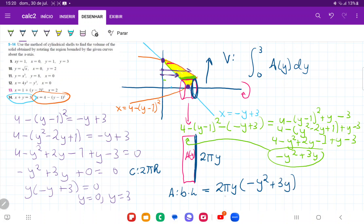So what I'm going to do is I'm just going to distribute this y so that we can integrate it easier. So that's minus y cubed plus 3y squared.